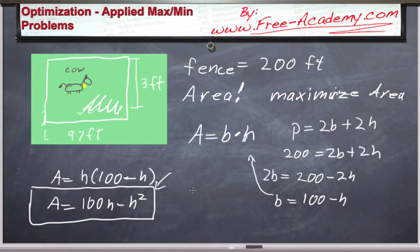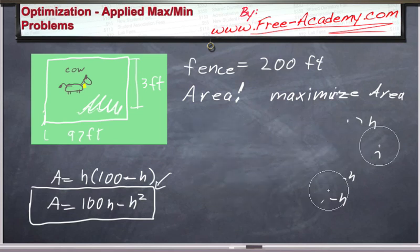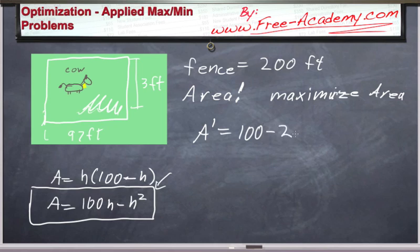This is something that we did with our concavity problems. You take the first derivative of it. So A prime is equal to 100 minus 2h, and you set that equal to 0.